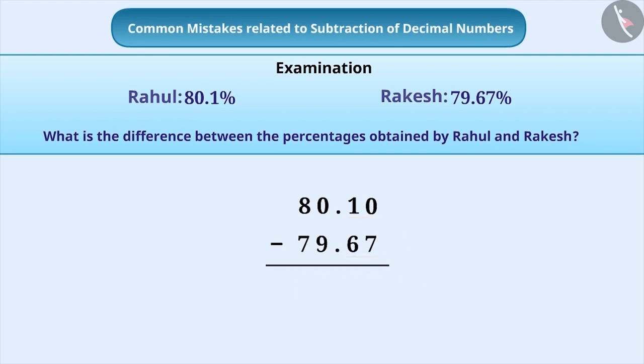Another common mistake is that students ignore to borrow. Here, 7 cannot be subtracted from 0. So 1 is borrowed and 1 is written as it is without reducing it. By doing so, they get 11.53 as the result, which is also incorrect.